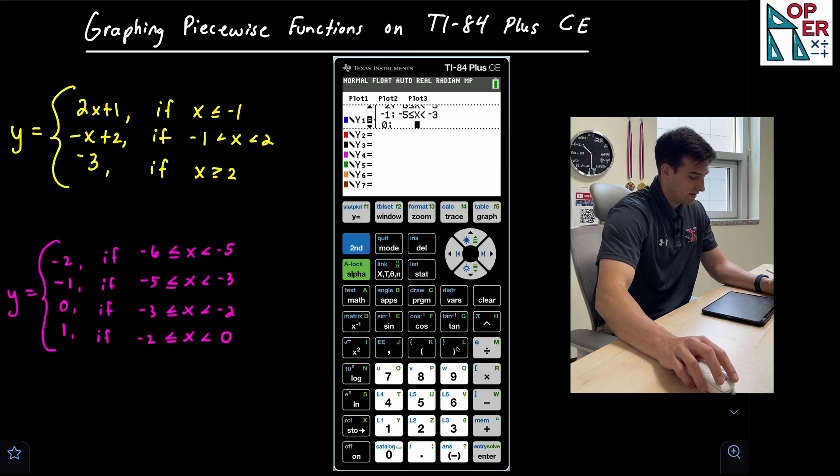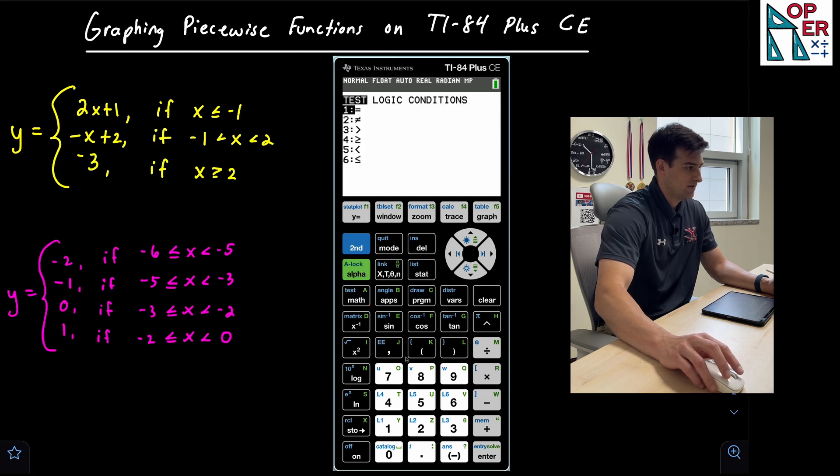Okay, then we want negative three to negative two. So negative three, second math, option number six, X, second math, option number five, and we're going to negative two.